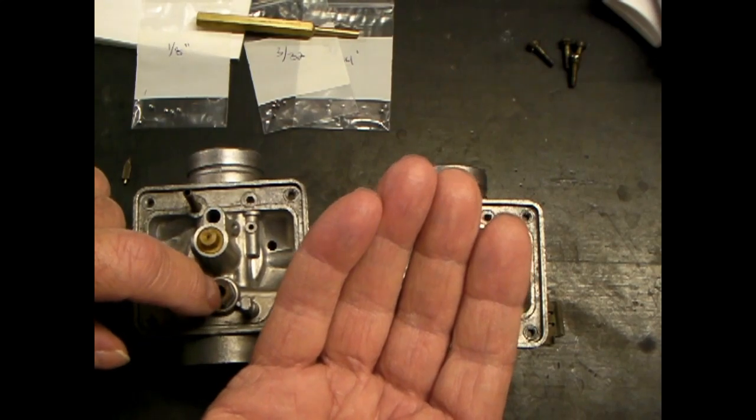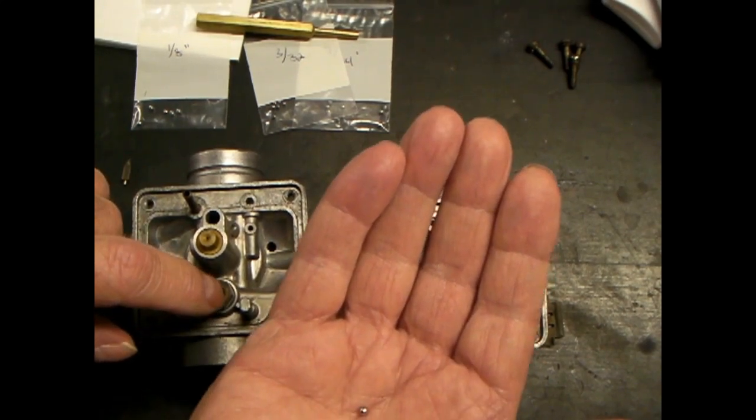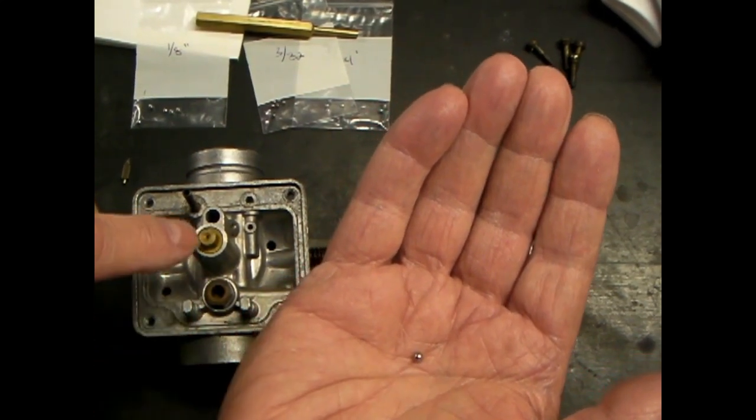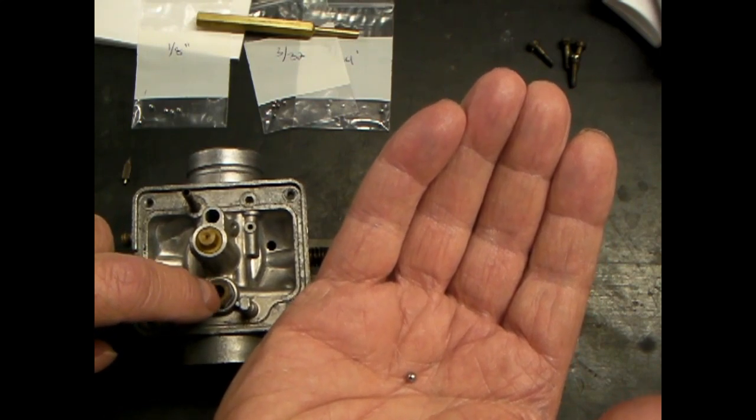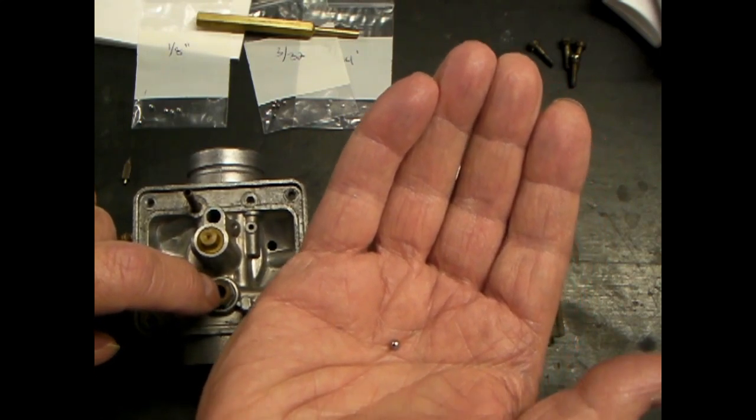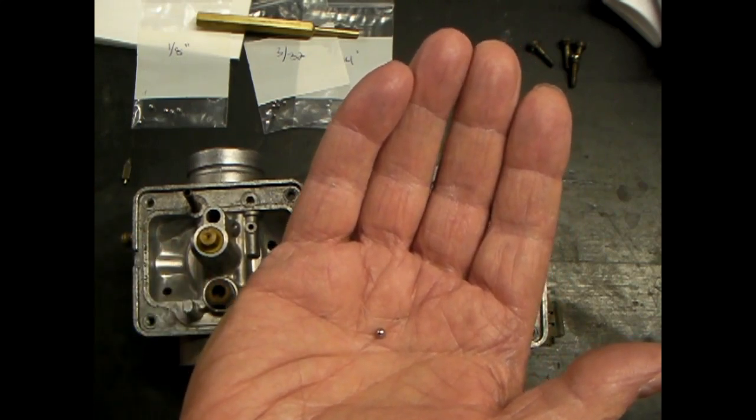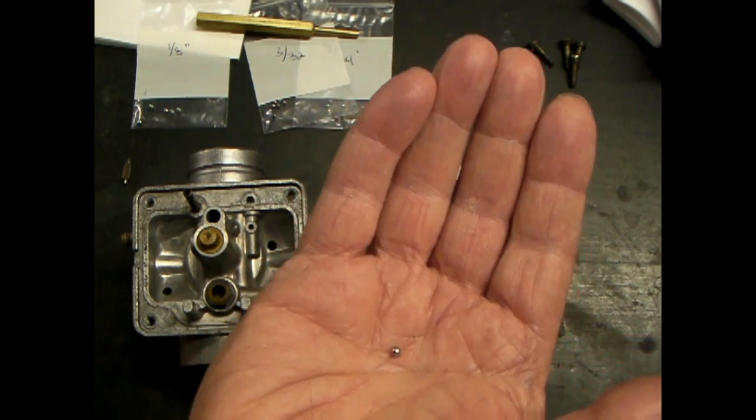I thought I'd have to make something to try to remachine the seat down in there or else just put on a new carburetor body. As an act of desperation I thought I'll get a steel ball, I found one of these balls in my drawer and I said I'll put that in there and smack it and see what that would do. By George that fixed it. Like I say, I've done five carburetors so far using this method and it does work.